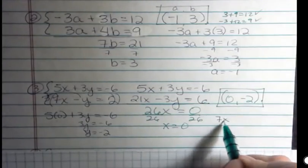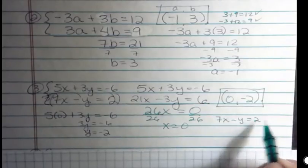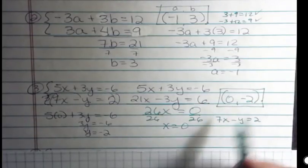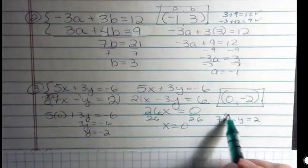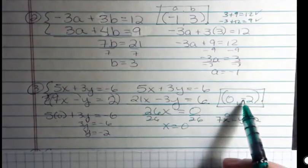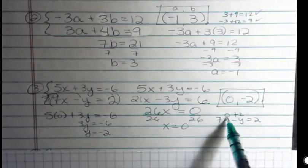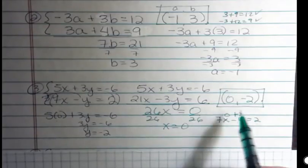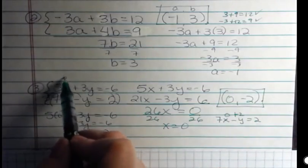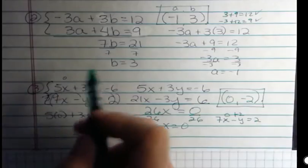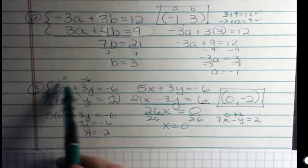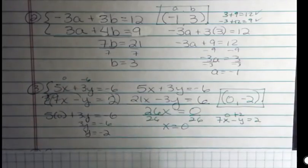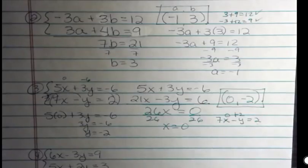But what about this equation? 7x minus y is 2. Would that be true? Well, if x was 0, 7 times 0 would be 0. Minus negative 2, that's like a plus 2. 0 plus 2 is 2. Yeah, that works out. And over here 5 times 0 is 0. And 3 times negative 2 is negative 6. And 0 and negative 6 is negative 6. So that's how I would check that to make sure that it's true.